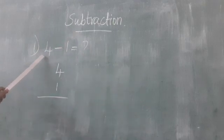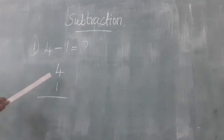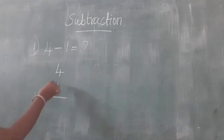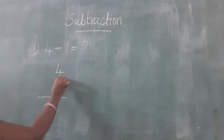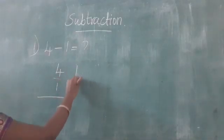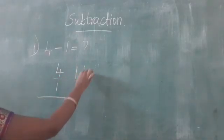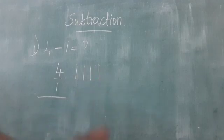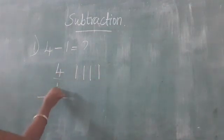4 minus 1. So first we write number 4, next number 1. So first we draw 4 lines: 1, 2, 3, 4. 4 minus 1.